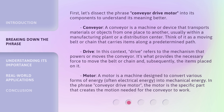Drive: in this context, 'Drive' refers to the mechanism that powers or moves the conveyor. It's what provides the necessary force to move the belt or chain and, subsequently, the items placed on it. Motor: a motor is a machine designed to convert various forms of energy, often electrical energy, into mechanical energy. In the phrase 'Conveyor Drive Motor,' the motor is the specific part that creates the motion needed for the conveyor to work.